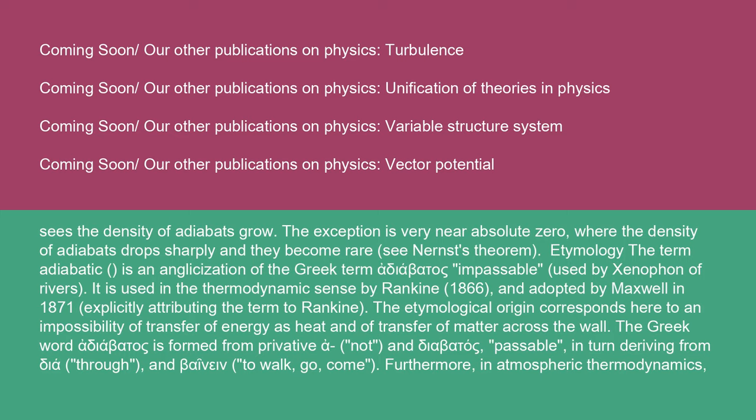Etymology: the term 'adiabatic' is an anglicization of the Greek term 'adiabatos,' meaning impassable, used by Xenophon of rivers. It is used in the thermodynamic sense by Rankine (1866) and adopted by Maxwell in 1871, explicitly attributing the term to Rankine.